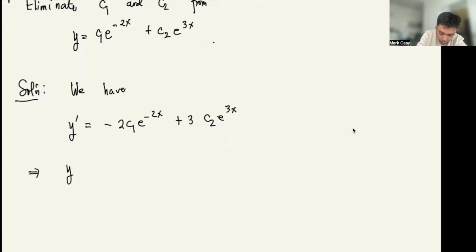And so our y double prime is 4c1 e to the negative 2x plus 9c2 e to the 3x. So I can label this as equation 1, this is equation 2, and this is equation 3.